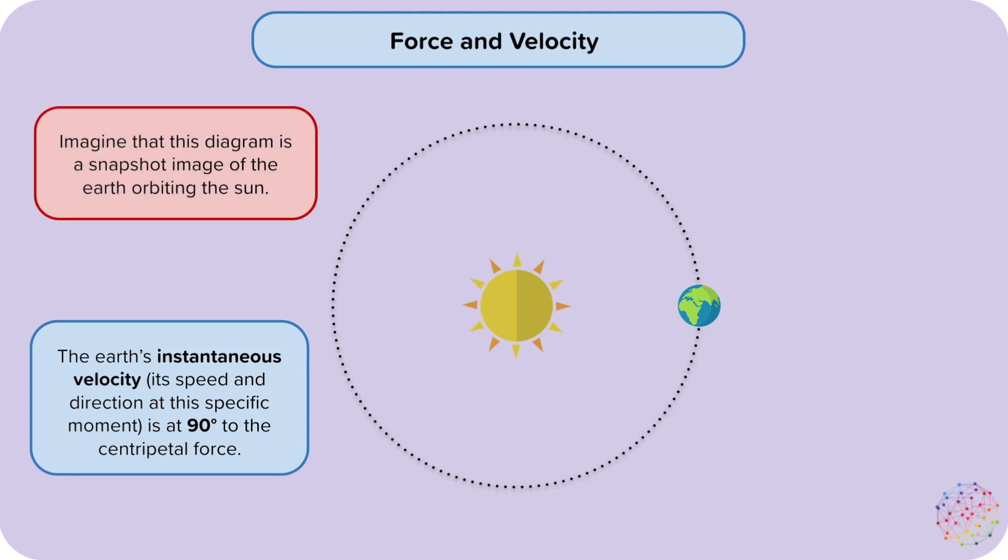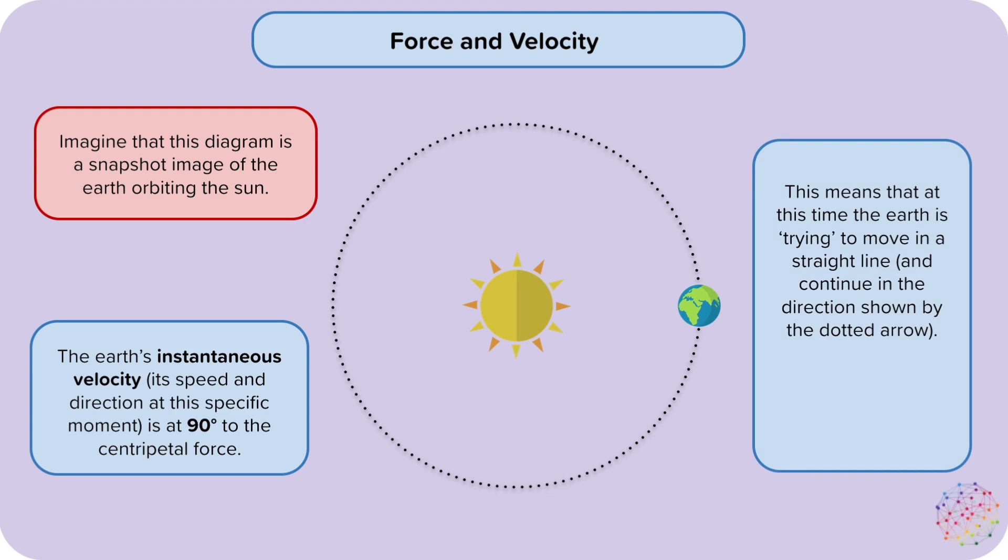Let's imagine that this diagram is a snapshot image of the Earth orbiting the Sun. This means that at this time the Earth is trying to move in a straight line and continue in the direction shown by the arrow.